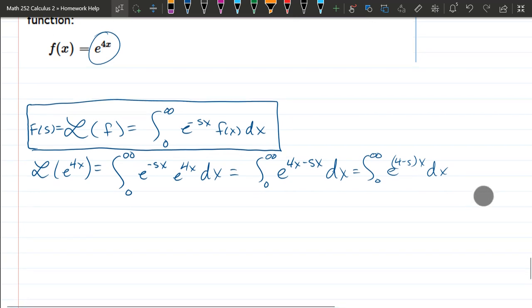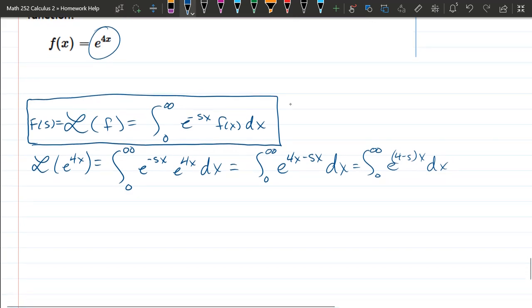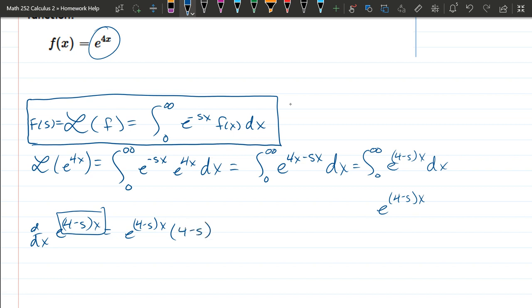Okay, so I'd like to find antiderivatives by guessing. So my guess is e to the (4 minus s) times x. So what's the derivative of this? The derivative is itself times the derivative. This is the chain rule, times the derivative of that which is just 4 minus s.